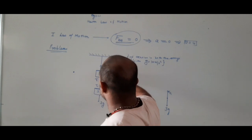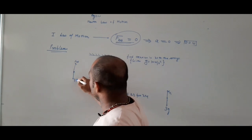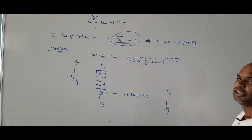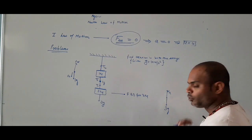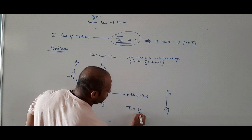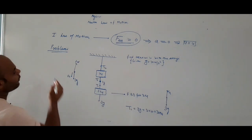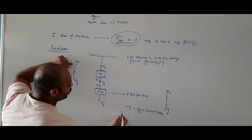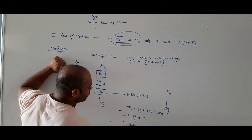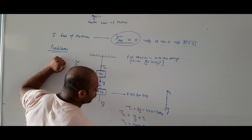FBD for the 3 kg block: downward force is 3g, and upward is T1 only. So T1 equals 3g, and since g is 10, T1 equals 30 Newton. For the 1 kg block: upward is T2, downward is 1g plus T1. So T2 equals 1g plus T1, which is 10 plus 30 equals 40 Newton.